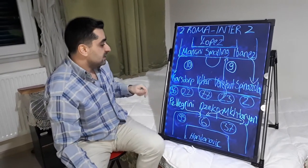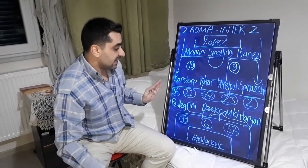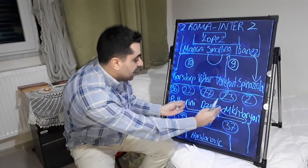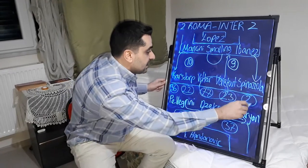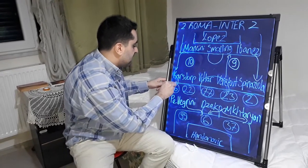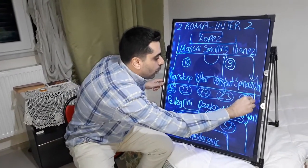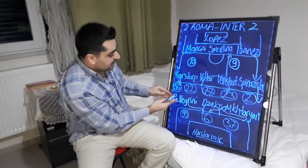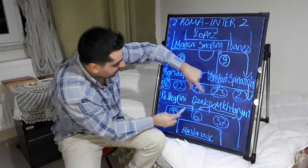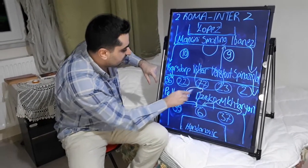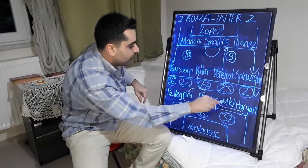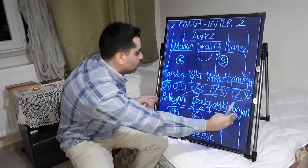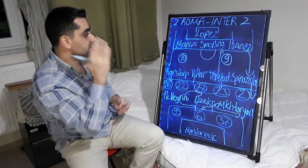And in Roma attacks, sometimes Dzeko and Mkhitaryan came to central forward together and Spinazzola and Karsdorp came forward. They made the forward four. And Pellegrini played behind Dzeko and Mkhitaryan. Sometimes Pellegrini came here, back of Dzeko and Mkhitaryan, Spinazzola and Karsdorp came forward in Roma.